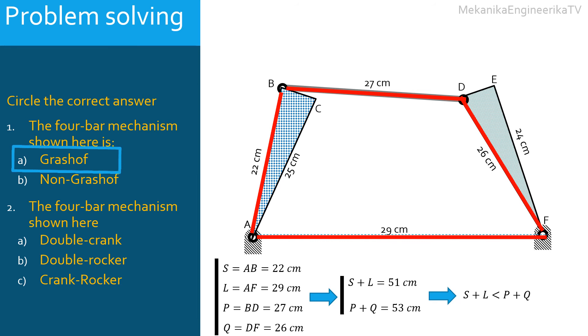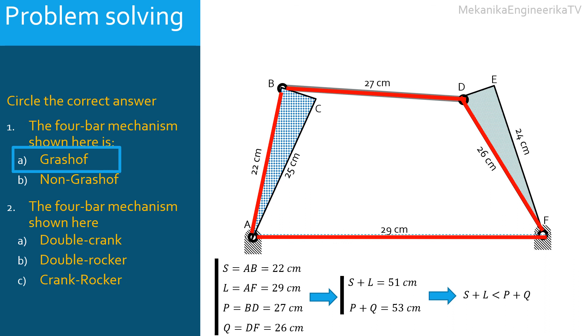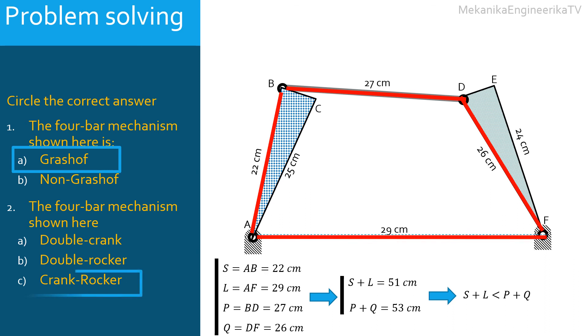As the mechanism here is Grashof, and as the shortest link AB is connected to the ground, then the mechanism is a crank-rocker.